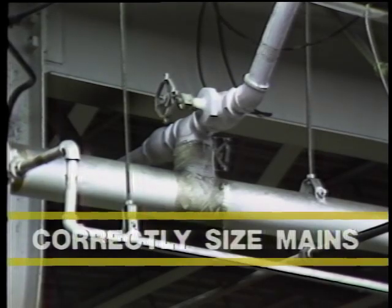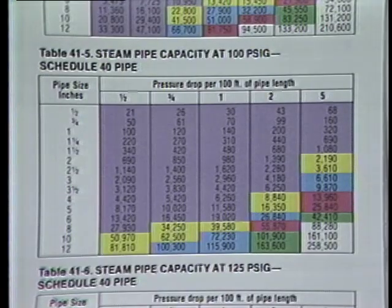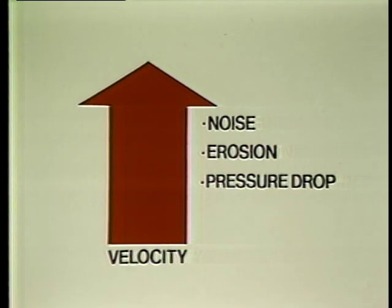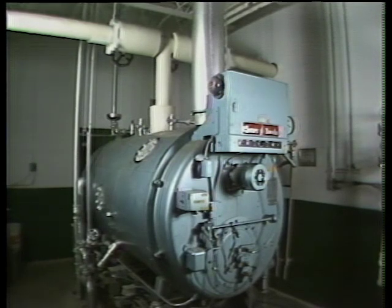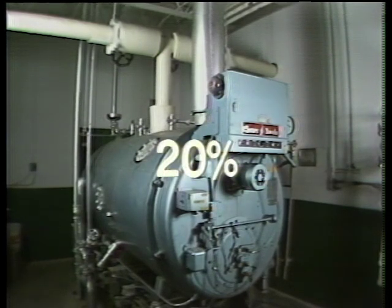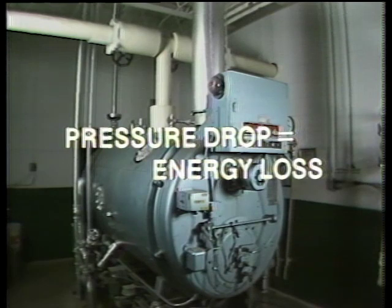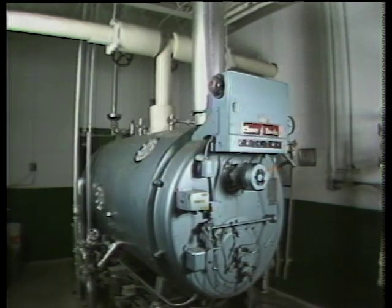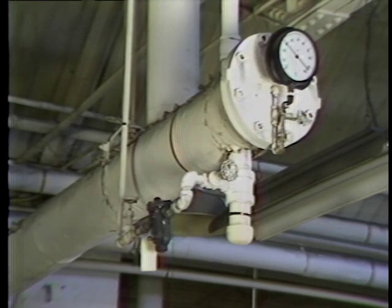Steam mains must be correctly sized to ensure efficient operation and to minimize maintenance costs. The size of the steam main piping is determined by the allowable pressure drop and velocity for a specific pressure. As velocity increases, so do noise levels, erosion potential, and the amount of pressure drop. The greatest pressure drop in the distribution system should not exceed 20 percent of the maximum boiler pressure, radiation and friction losses included. Remember, pressure drop is energy loss. Although the initial cost may be higher, oversizing steam mains to reduce velocities and pressure drops can help minimize future trouble and expense in your plant's operation.